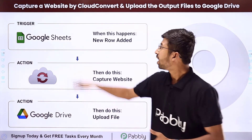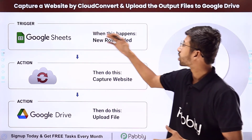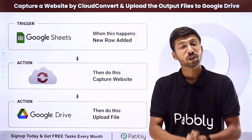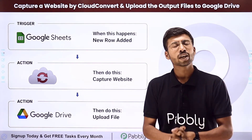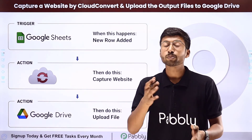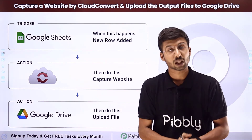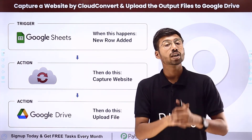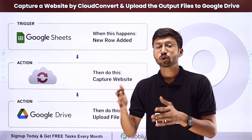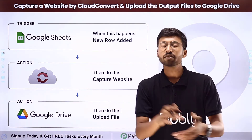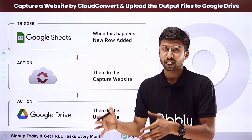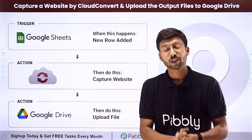In this video we will learn how to capture a website by CloudConvert and upload the output file on Google Drive. We are going to set up an automation where you input a website URL into CloudConvert, and CloudConvert will automatically capture that website into a particular format — for example, PDF — and then upload the captured PDF of that complete website to Google Drive.